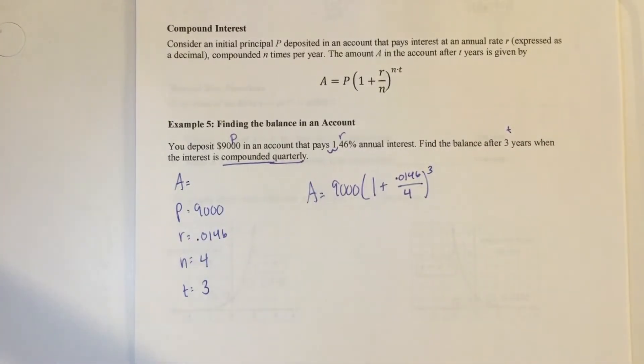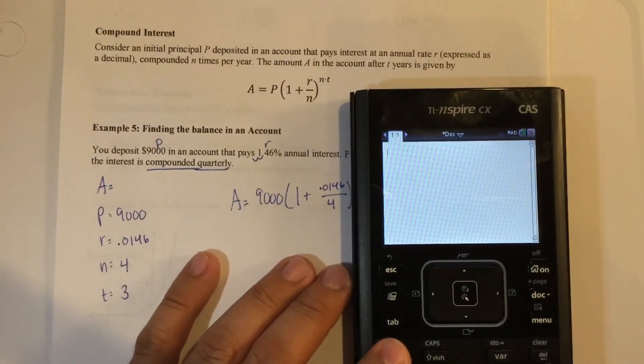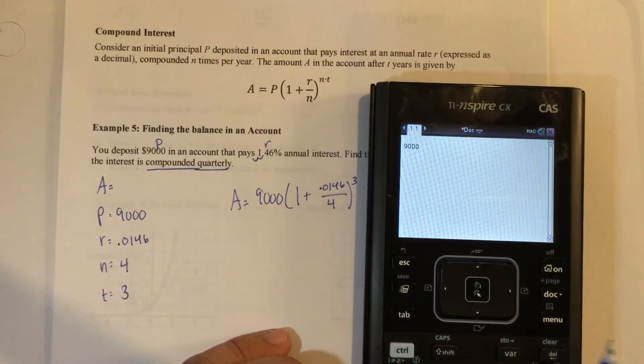Then you just simply take that and type it into a calculator. It doesn't have to be a TI. It could be a basic scientific calculator, but this is what I have right now. So 9,000, parentheses,